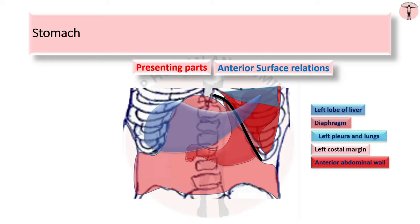The space between the left costal margin, the sixth costal cartilage representing roughly the lower border of the liver and inferior border of the lung, and the midaxillary line is called Traube's space. On percussion, there is a resonant note usually, but in cases with splenomegaly or pleural effusion, a dull note is found.